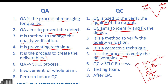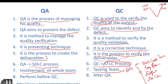QA is part of the SDLC — mainly the software development lifecycle — while QC falls under the software testing lifecycle. QA involves the whole team, while QC involves the testing team. Generally, quality assurance is performed before QC, and QC performs after QA. The SDLC happens first, and once the product is ready, the software testing lifecycle begins.